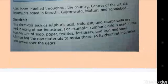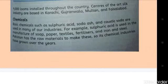The next point worth discussing is chemicals. Basic chemicals such as sulfuric acid, soda ash and caustic soda are used in many of our industries. For example, sulfuric acid is used in the manufacture of soap, paper, textiles, fertilizers, and iron and steel. Pakistan has the raw materials to make these, so its chemical industries have grown over the years.